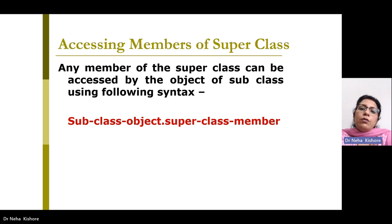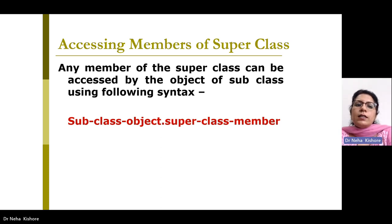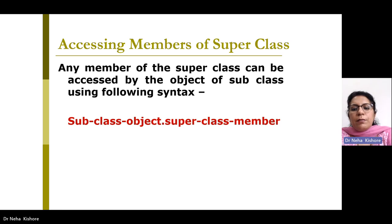Now let's learn how to access inherited members. Any member of the super class can be accessed by an object of the subclass using the dot operator. The syntax is: subclassObject.superclassMember. The dot operator is the key mechanism through which we access the member functions of the base class.